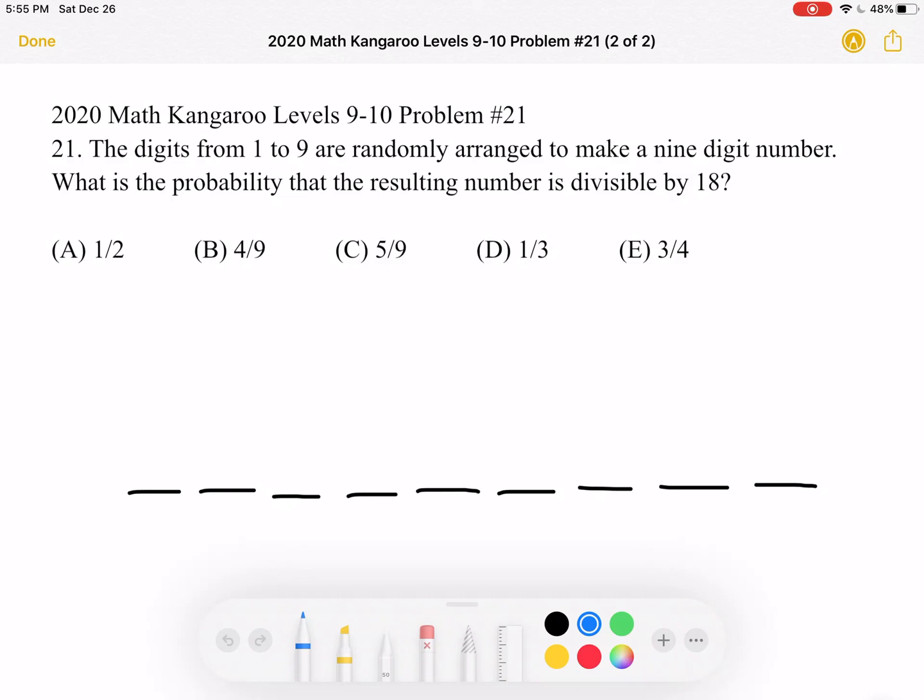To start, let's keep in mind that we're looking for the probability that the resulting number is divisible by 18.